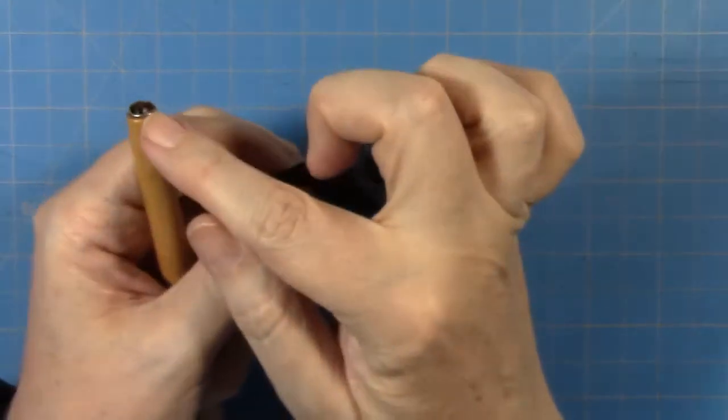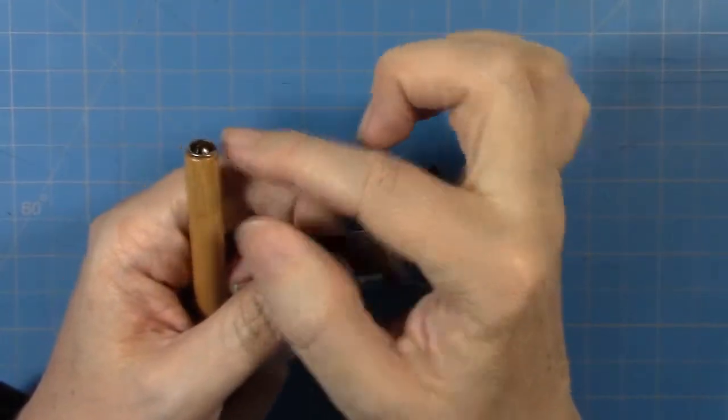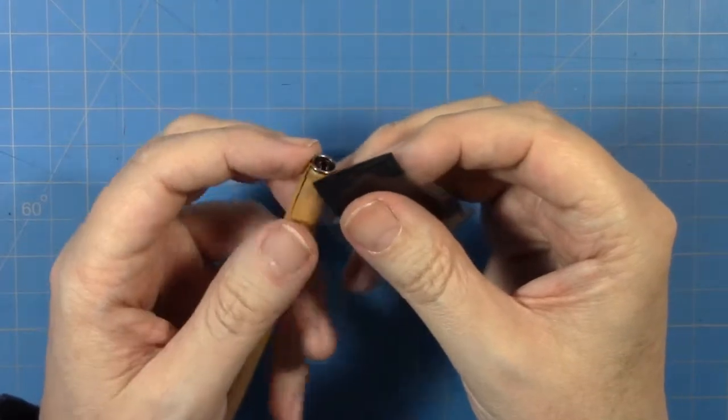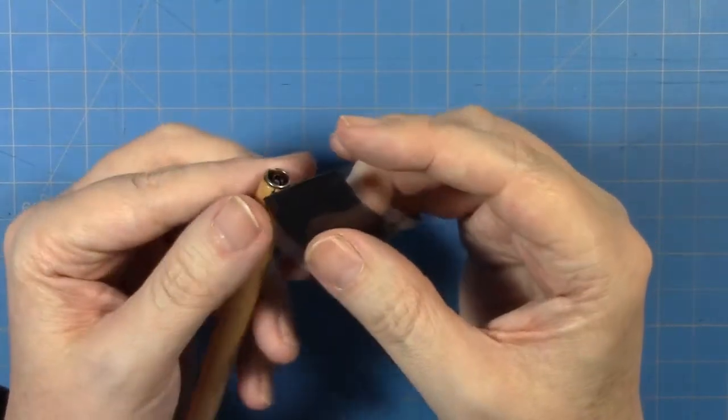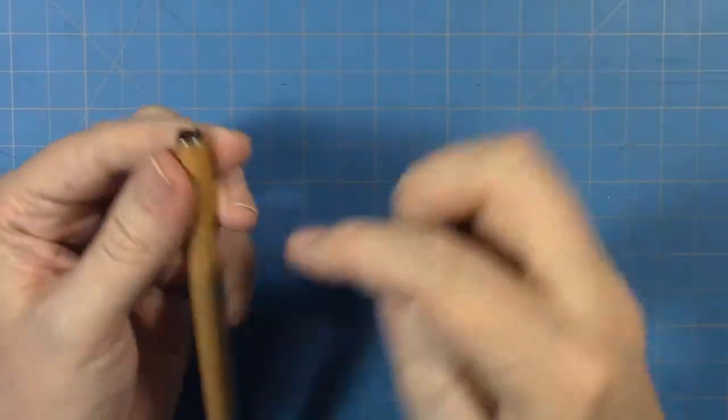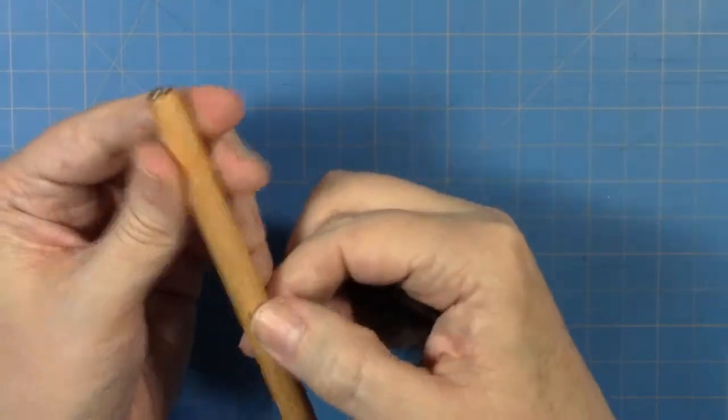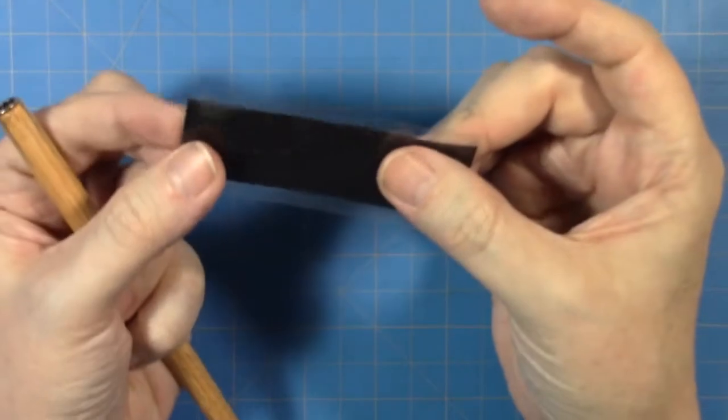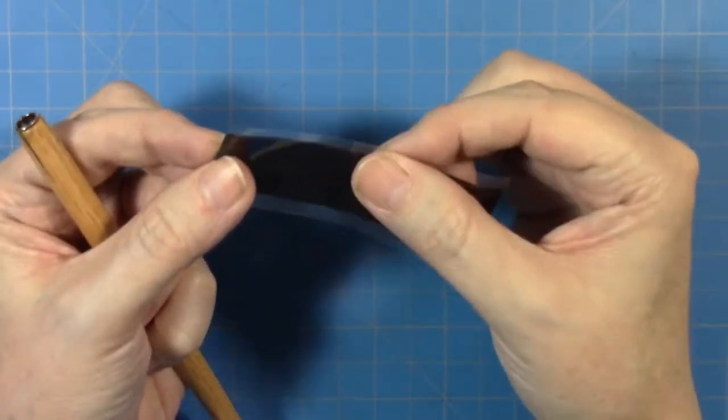Now, I like to have nice, even edges around the end because it's actually easier. That means you don't have to really clean up the edges much or anything. Now, when you apply this tape, you have to stretch it at least twice its length.